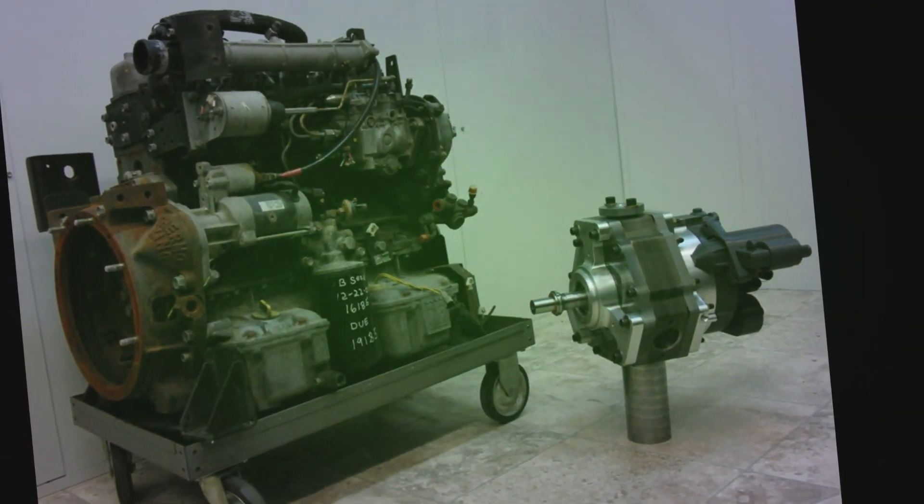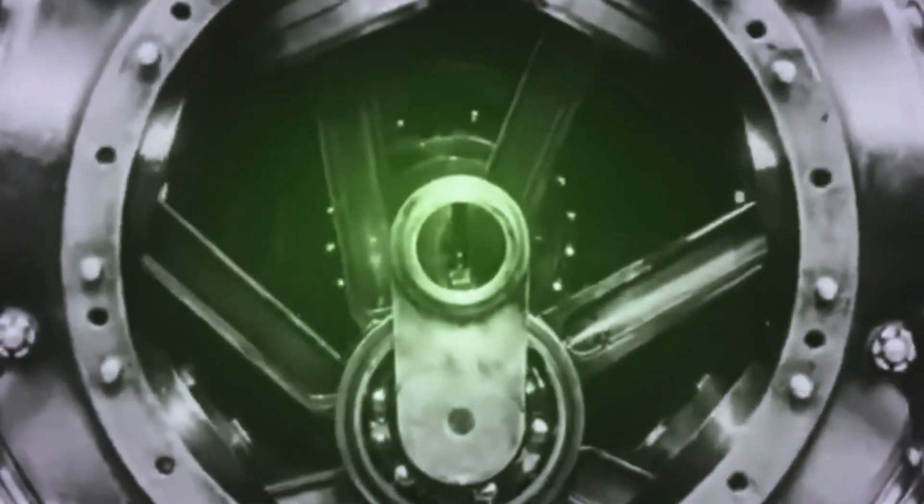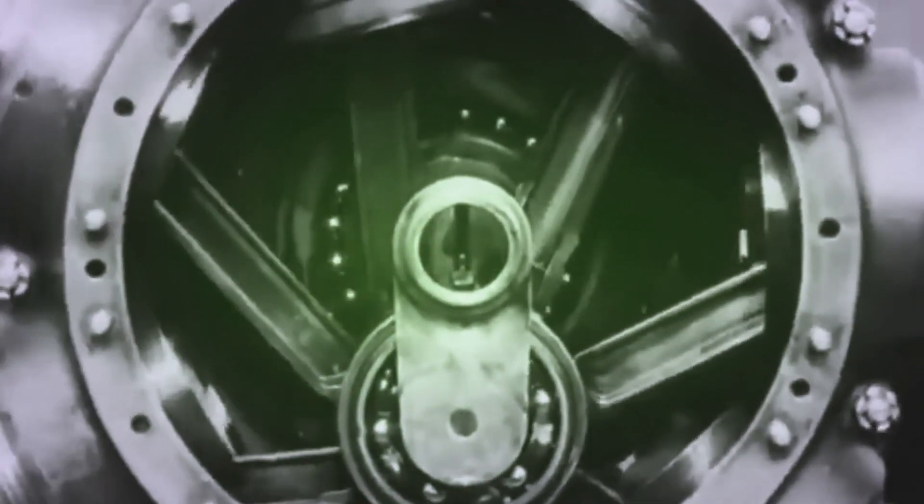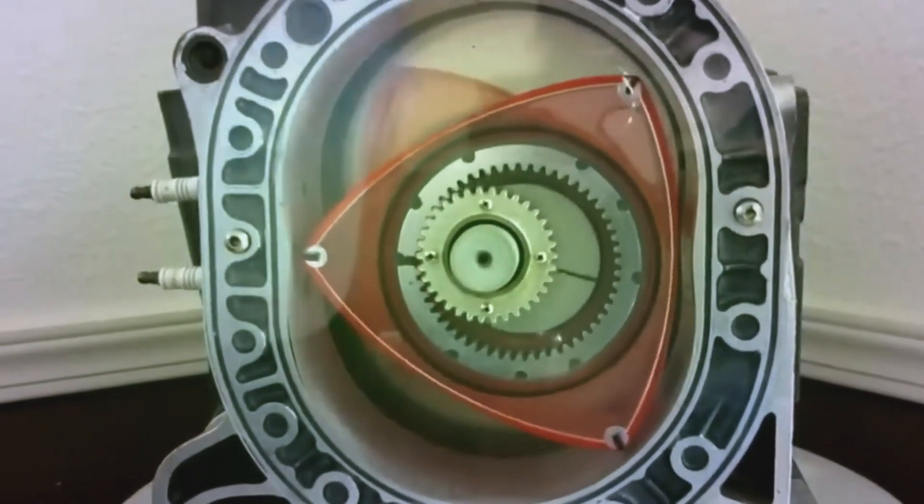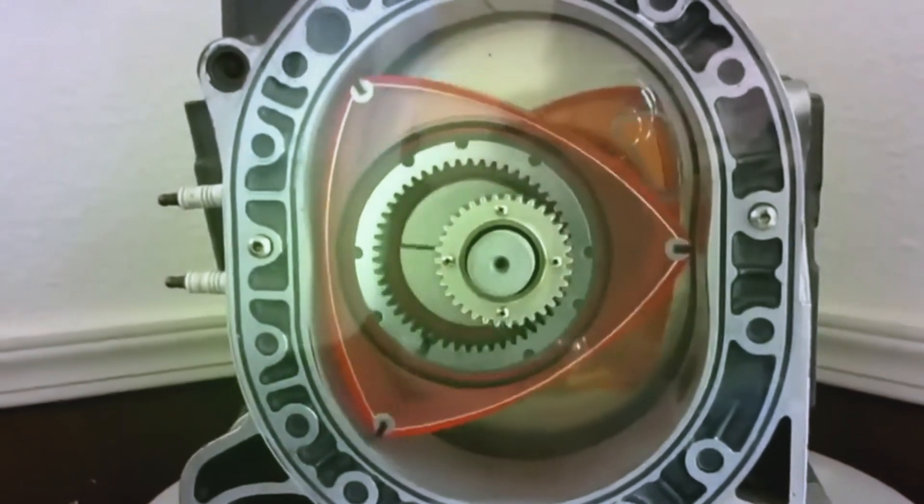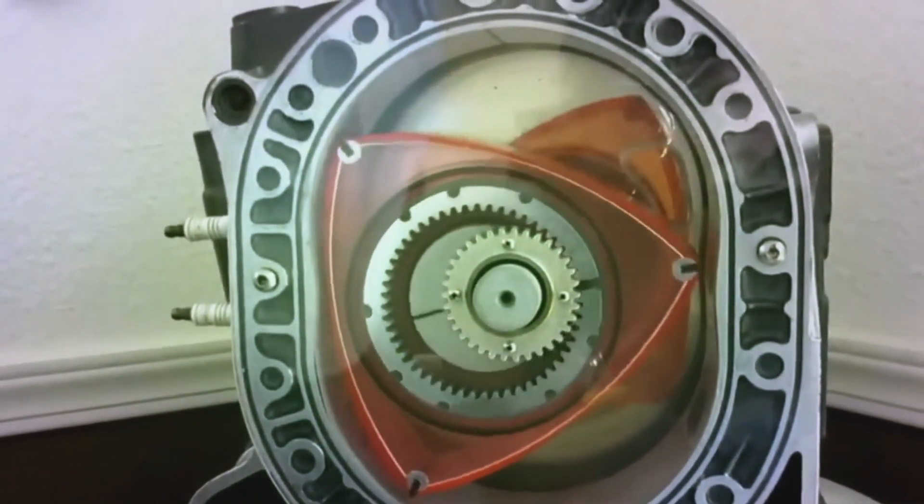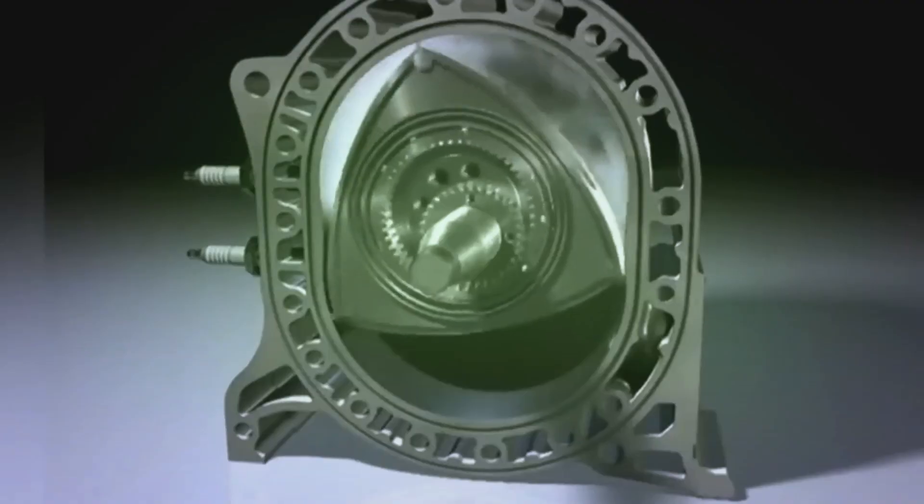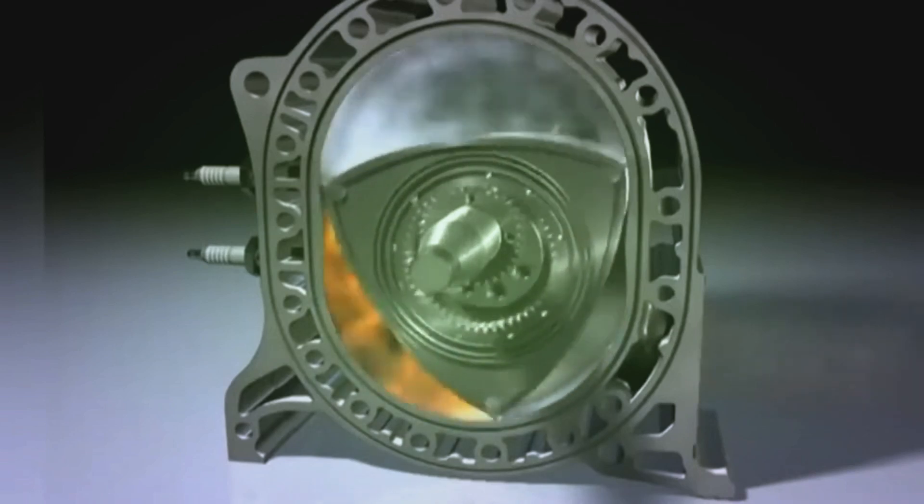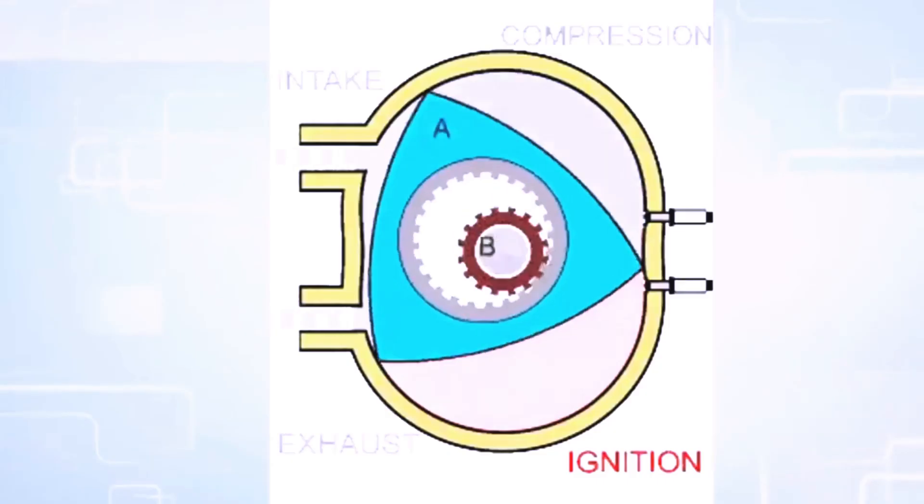The X-Engine isn't picky about its fuel. It can run on gasoline, diesel, or alternative options like hydrogen, and even sustainable aviation fuel. This versatility opens doors for various applications, from conventional vehicles to unmanned aerial vehicles, UAVs, and even the aerospace industry. Notably, the X-TS 210 engine variant is specifically designed for jet fuel or diesel, making it a compelling option for aerospace manufacturers seeking compact and efficient power solutions.